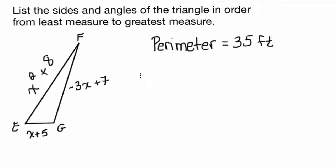Here's another problem where we have to list the sides and angles of the triangle in order from least measure to greatest measure. This is a more difficult one. We are given the measures of the sides as x squared plus 8, negative 3x plus 7, and x plus 5.